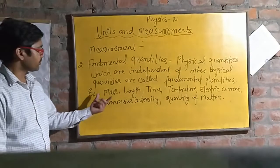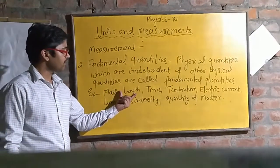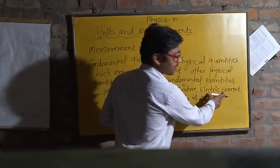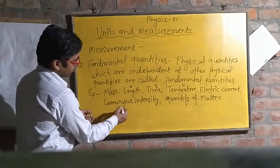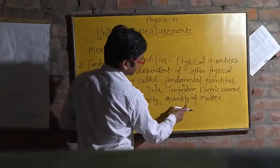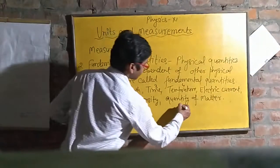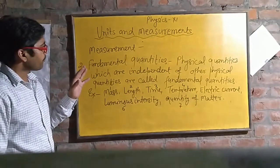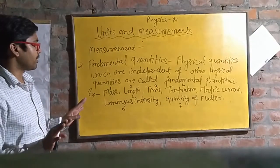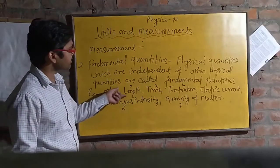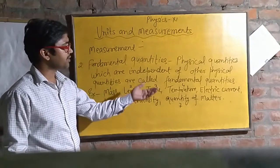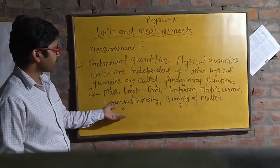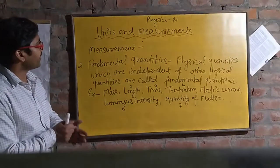There are total seven fundamental quantities. First one is mass, second is length, third is time, fourth is temperature, fifth is electric current, sixth is luminous intensity, and seventh is quantity of matter. Fundamental quantities are those quantities which are independent from any other physical quantity. Mass is independent of time, length, temperature, electric current, luminous intensity, and quantity of matter. Similarly, quantity of matter is independent from the other six.